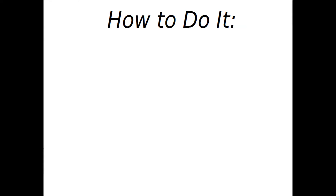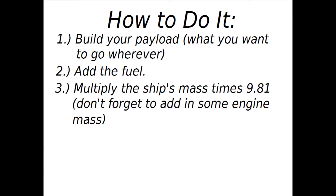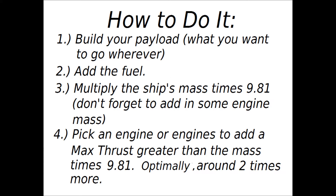Here's how you do it — a quick four-step process. First, build your payload; whatever you want to get into space, whatever's going to be moving around out there. Second, add the fuel to give it the delta-V necessary, and think about what kind of ISP you're going to need for that. Third, multiply the ship's total mass by 9.81 — that's Kerbin's gravitational acceleration. Fourth, pick an engine or engines whose max thrust adds up to greater than that number: total mass times 9.81. Don't forget to include the rocket's engines as part of that mass.